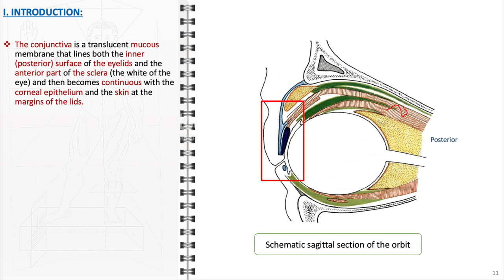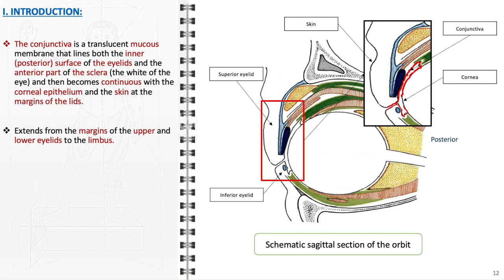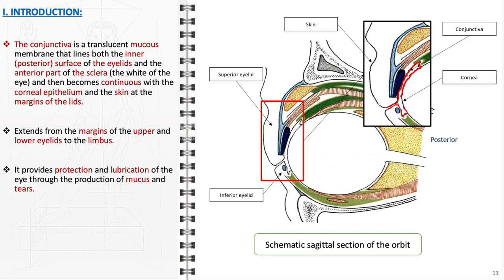The conjunctiva is a translucent mucous membrane that plays a crucial role in ocular health. It lines the inner surfaces of the eyelids and extends anteriorly to cover the white of the eye, known as the sclera, before merging with the corneal epithelium at the limbus and continuing to the skin at the lid's margins. Spanning from the edges of both the upper and lower eyelids to the limbus, it forms a protective barrier that provides lubrication to the eye through the secretion of mucus and tears.